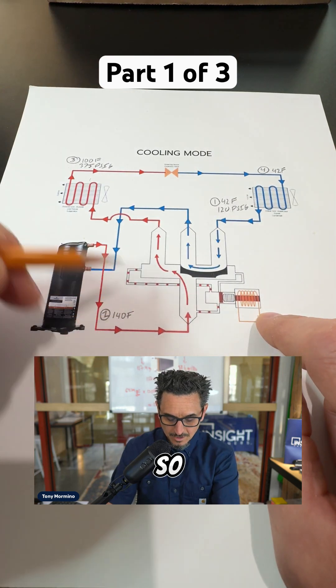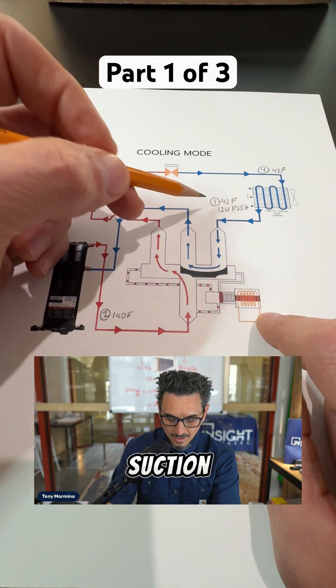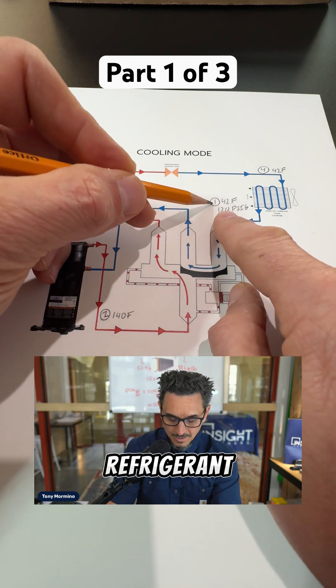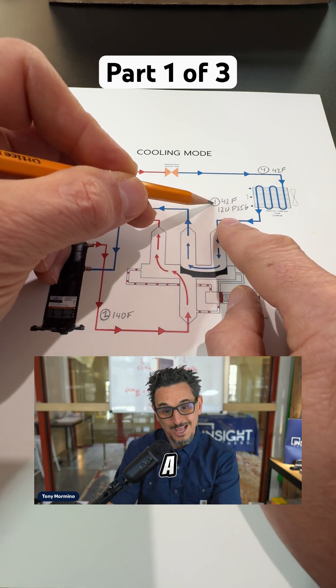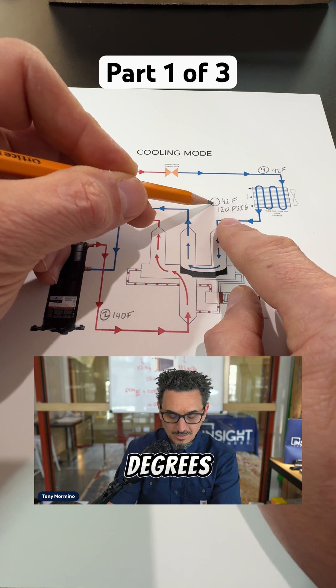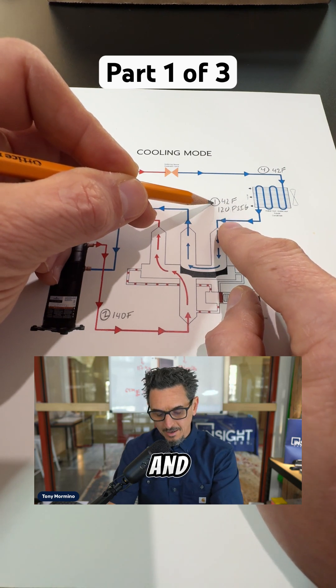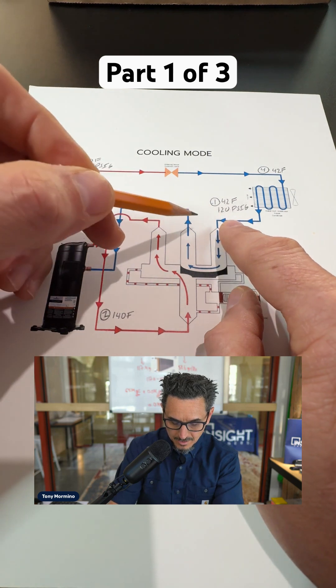Let's walk through the function of each of these. I like to start with the suction line, which is the refrigerant leaving the evaporator. In this case, we're going to look at 410A, which is about 42 degrees leaving and approximately 120 PSI.